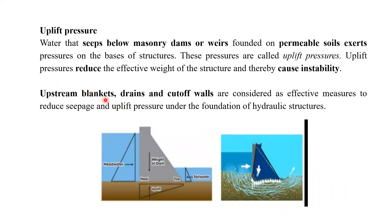Upstream blankets, drains, and cutoff walls — we have already studied how we can prevent piping failures. Upstream blankets, drains, and cutoff walls are considered effective measures to reduce seepage and uplift pressure under the foundation of hydraulic structures. Once you control the seepage, we can also control the uplift pressures.